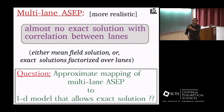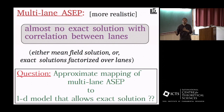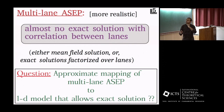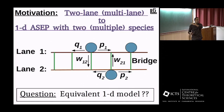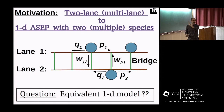The question we are trying to pose is: can we have an approximate mapping from the multi-lane ASEP to some one-dimensional model which allows an exact solution? To summarize the motivation in one line, we are trying to have a mapping from multi-lane ASEP to a one-dimensional ASEP with multiple species. So let us start from the original two-lane model.